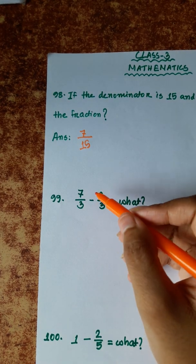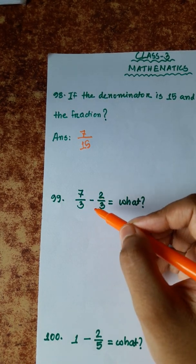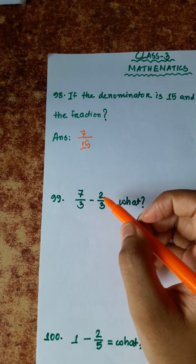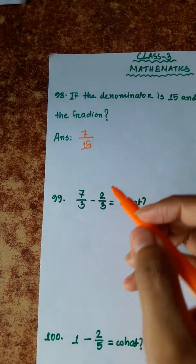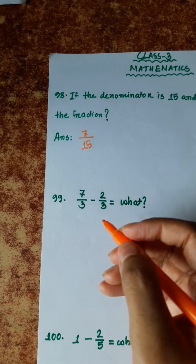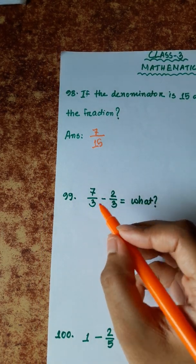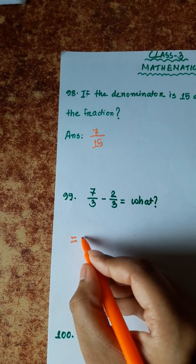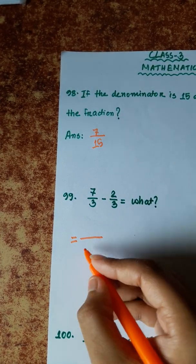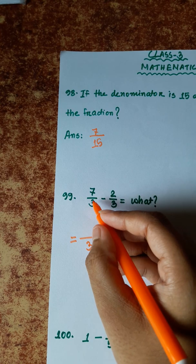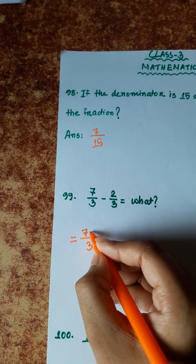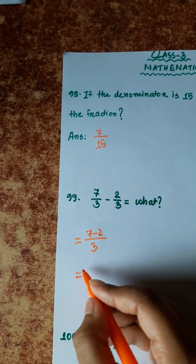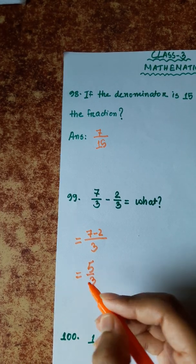Question 99 is subtraction of fractions. When the denominators are the same, we subtract the numerators directly. Here the denominator is 3, and the numerator is 7 minus 2. Since 7 minus 2 is 5, the answer is 5/3.